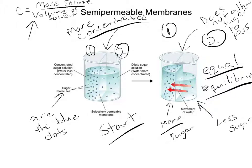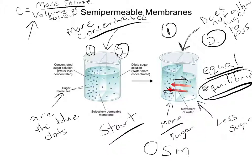That does not mean that the water molecules stop moving. For every one molecule that goes one way, there's a water molecule that goes the other way once equilibrium is reached. So we have dynamic equilibrium. This is all because the membrane is semi-permeable and does not allow sugar to pass through — only water. Things are always forced to move from high to low, and this movement of water we call osmosis.